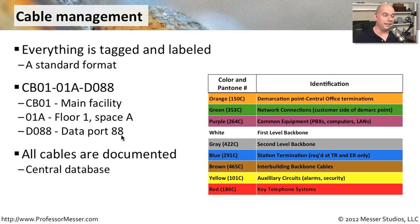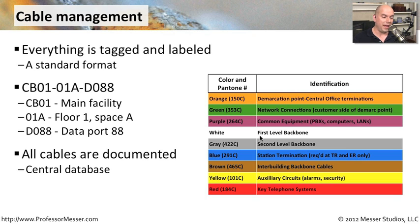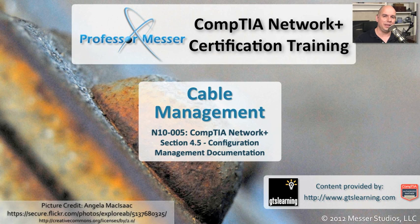There are other ways to identify cables and document them in a central database. The EIA-TIA standard even goes through the process of understanding what colors you should use for different cables. Your demarcation is orange, your first level backbone is white, and your auxiliary circuits should be yellow-labeled cables. If you're able to maintain that standard throughout your organization, it's going to help you quickly find the cables you need. If you have a lot of cables to manage, this type of standardization can be extremely valuable.